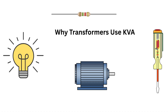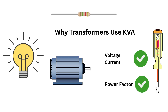Motors, on the other hand, actually consume power to do work, like running a fan, pump, or machine. This power is measured in Kilowatt because it directly relates to the mechanical work being done. Power factor matters here — the motor draws current and generates torque, and losses like heat and friction affect actual power used.